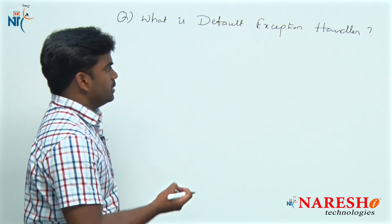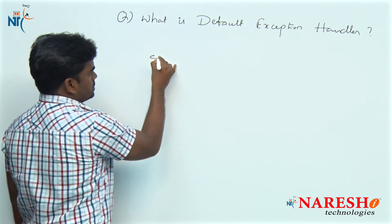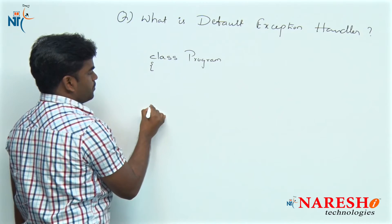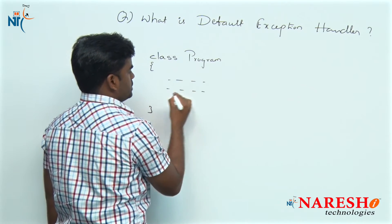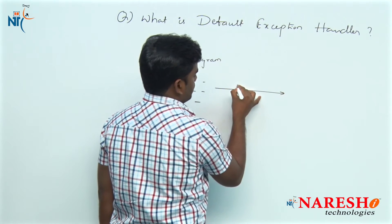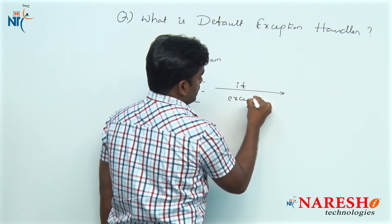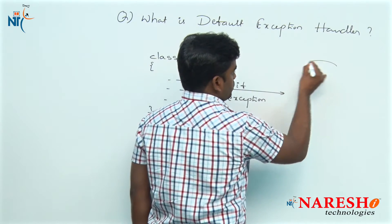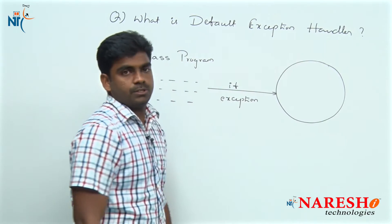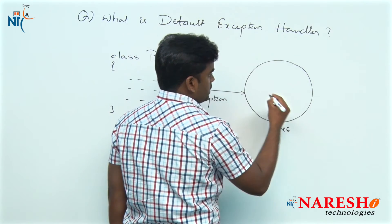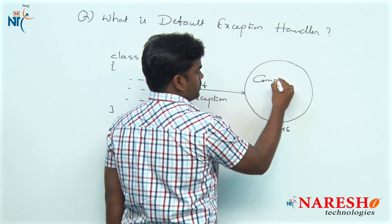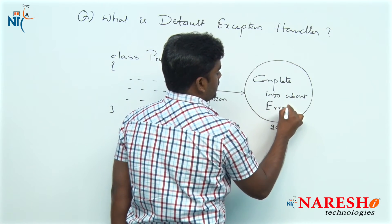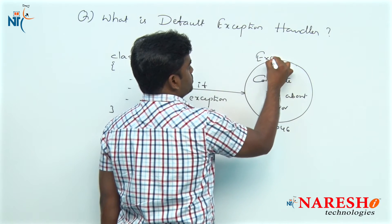For example, inside the program — inside this class — if any exception has raised with your logic, with your instructions, if an exception has raised, one exception object will be created. That block or method creates an exception object at some location with complete information about the error — it is a runtime error. That is what we call an exception object.